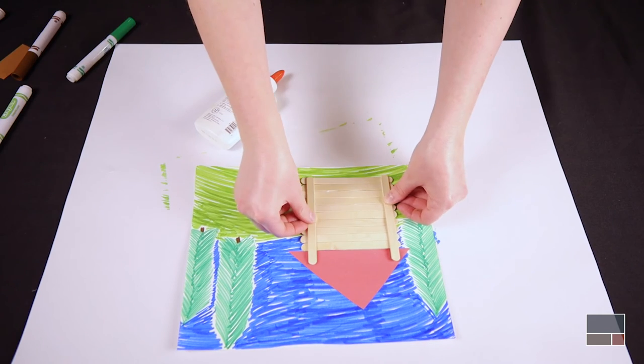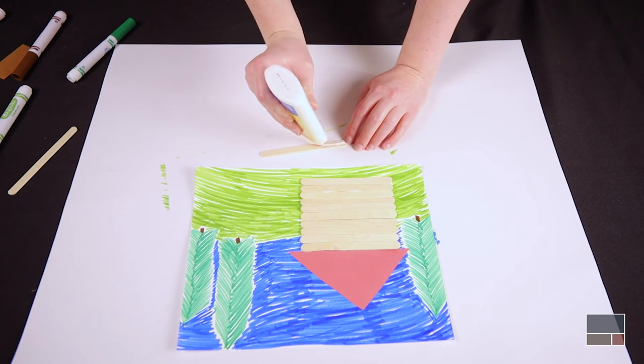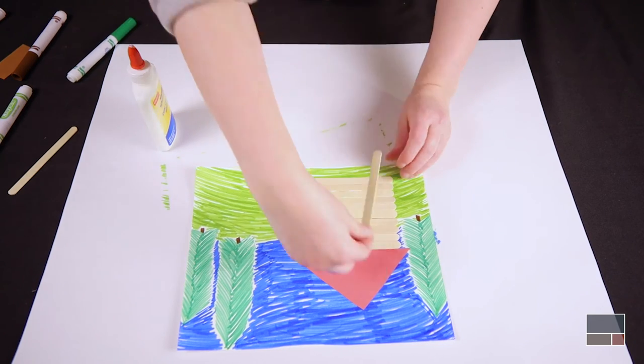You can also use popsicle sticks to add detail to your lodge. We have used two sticks placed vertically to add detail to our lodge.